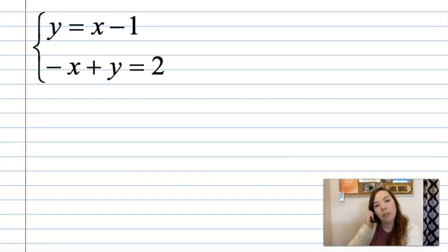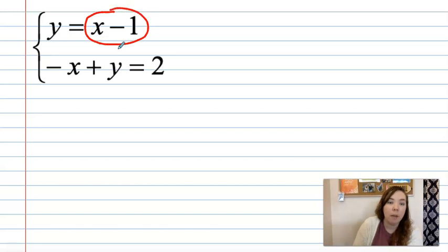All right, y equals x minus 1 and negative x plus y equals 2. So honestly my favorite way to decide how many solutions they have is to just start working the problem. This is already set up where y is isolated so the easiest method to solve this problem would be substitution. So that's what I'm going to use. I'm going to take what y is equal to and I'm going to plug it in for y. So I'm going to have negative x plus x minus 1 equals 2.